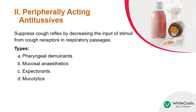Peripherally acting antitussives suppress the cough reflex by decreasing the input of stimuli from cough receptors in respiratory passages. These drugs are of four types: pharyngeal demulcents, mucosal anesthetics, expectorants, and mucolytics.